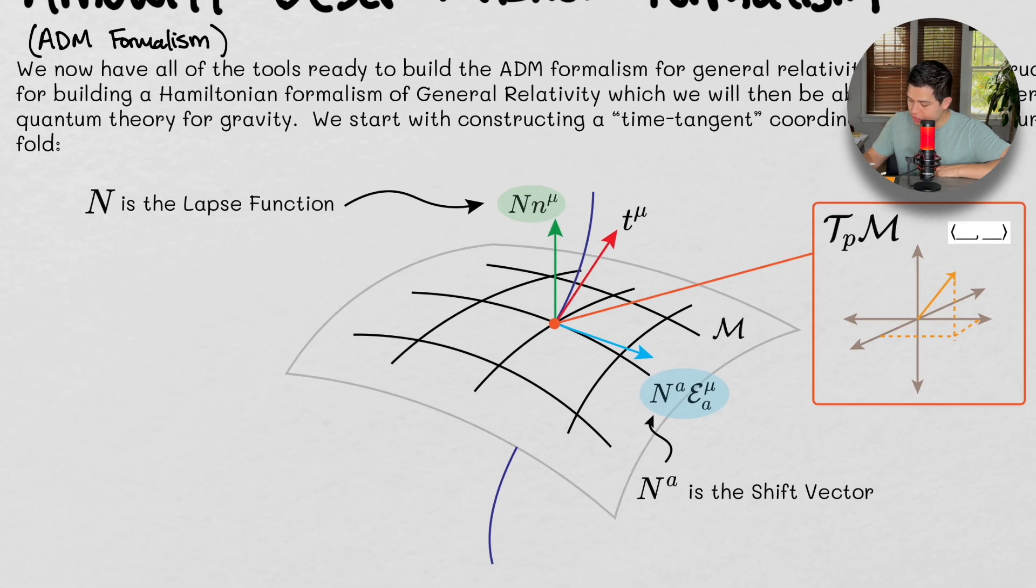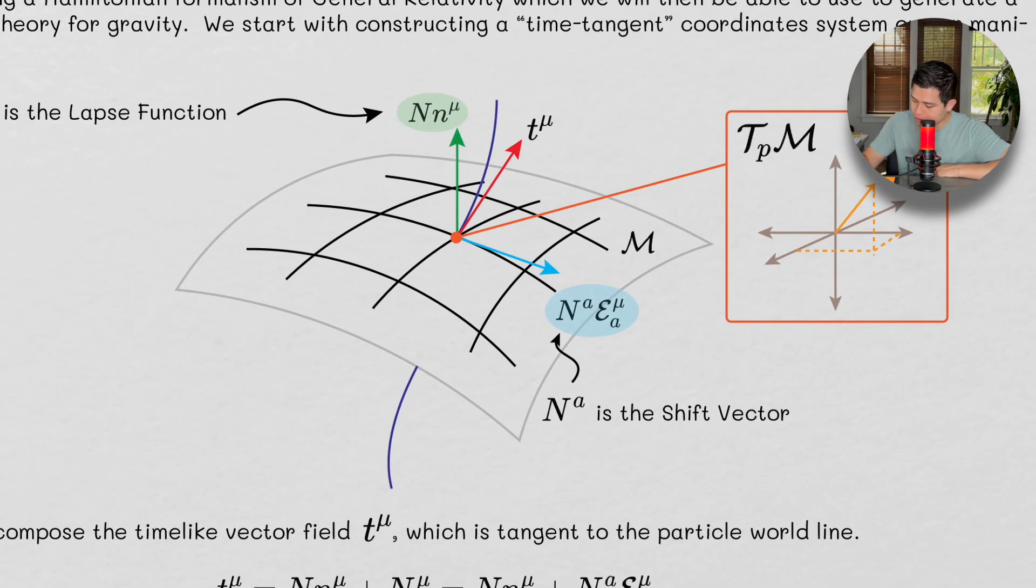Okay, so our geodesic is this purple thing. The geodesic is a line in space-time. Now, the reason it looks like this is because I can only conceptualize so many dimensions. So our manifold is this thing, and it can be n-dimensional. In this case, it looks like it's two-dimensional, but it can be n-dimensional.